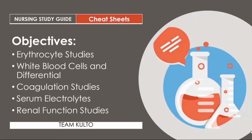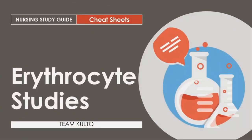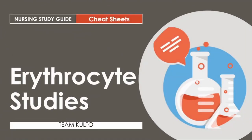What can you expect in today's discussion? For Part 1, we are going to discuss erythrocyte studies, white blood cells and differential, coagulation studies, serum electrolytes, and renal function studies. Are you ready? Let's begin. Alright — erythrocyte studies. Here we go.